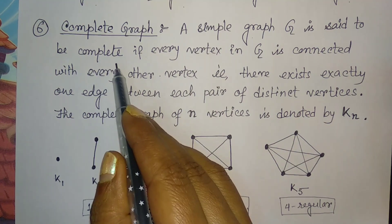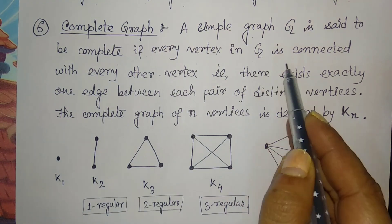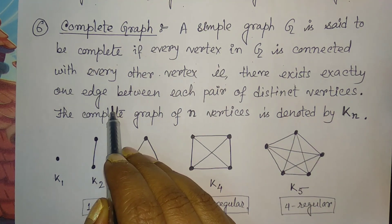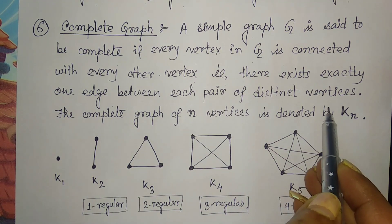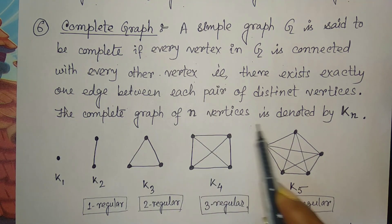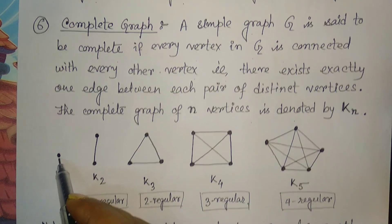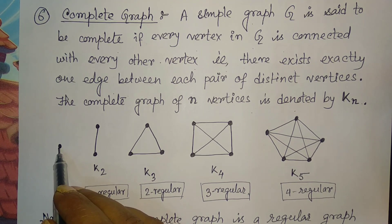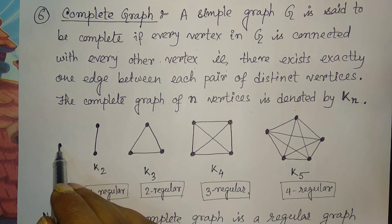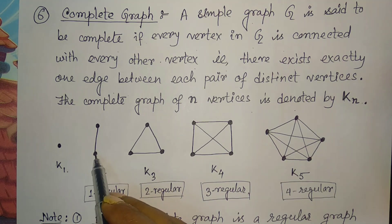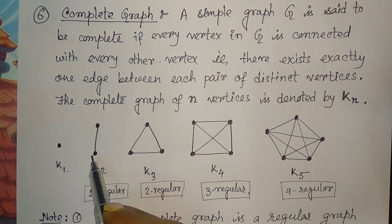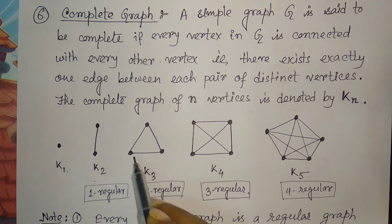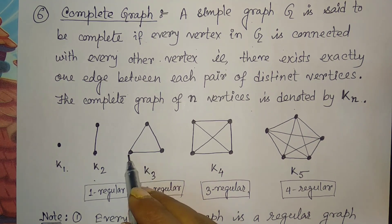Now, the complete graph. A simple graph g is said to be complete if every vertex in g is connected with every other vertex — that is, there exists exactly one edge between each pair of distinct vertices. The complete graph of n vertices is denoted by Kn. With one vertex there is no edge, so it is K1. With two vertices joined by one edge, it is K2. With three vertices, it is K3.